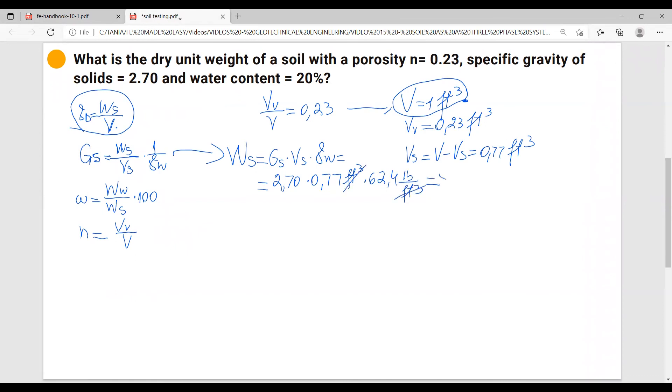This means that weight of solids equals to, let's calculate: 2.7 times 0.77 multiply 62.4. It is 129.73 pounds.